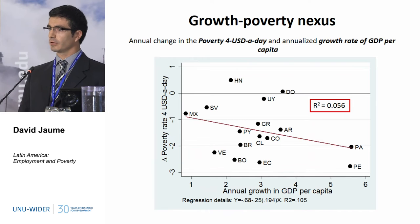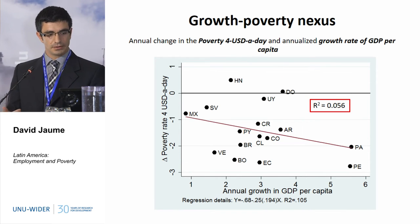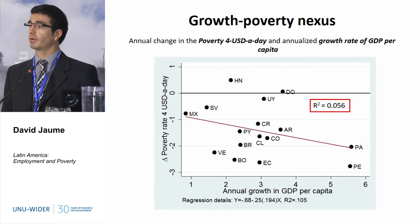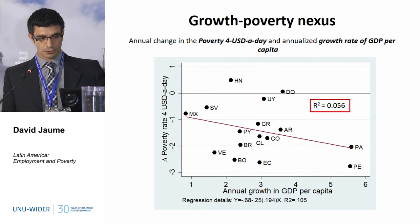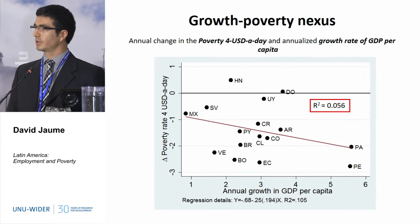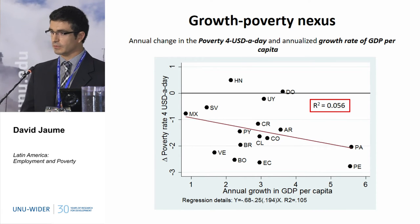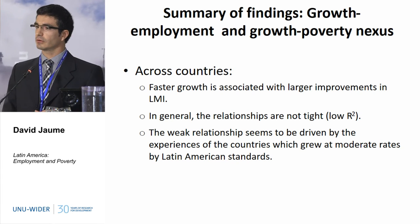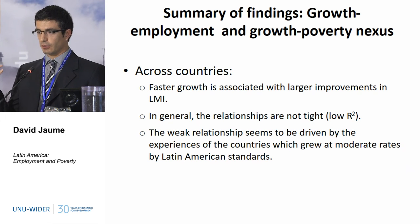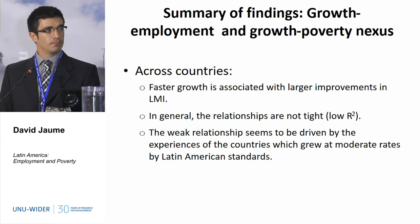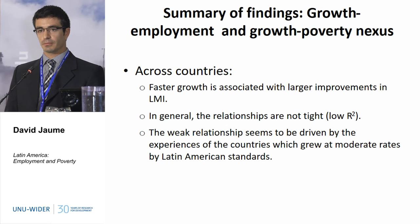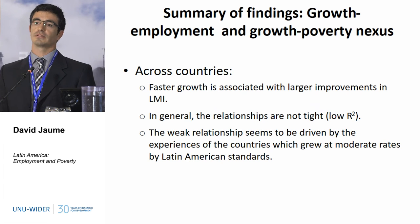This is also a very interesting relation: countries with a higher rate of economic growth managed to have a larger reduction in poverty. We found that in general the slope is negative but the relationship is also very weak — the R-squared is only 0.05. So the main conclusion from this section is that countries with larger rates of economic growth generally have larger improvements in labour market indicators, but the relationship is not very tight. Economic growth seems to be important, but it's not the only thing that matters for the region.